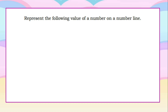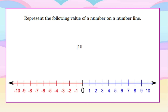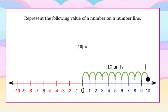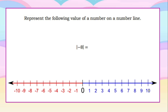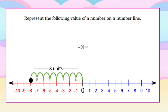Now let's represent the absolute value of numbers on a number line. For the absolute value of 10: we always start from 0, and 10 is 10 units to the right of the origin. Therefore, the distance of 10 from 0 is 10 units, so the absolute value of 10 is 10. For negative 8: it is a negative number, so it is to the left of 0. We move 8 units to the left and end at negative 8. The distance between 0 and negative 8 is 8 units, so the absolute value of negative 8 is 8.